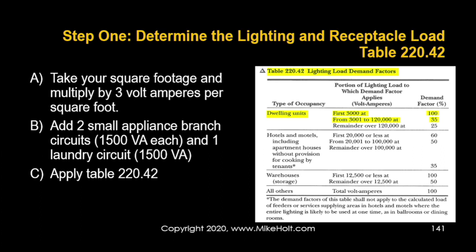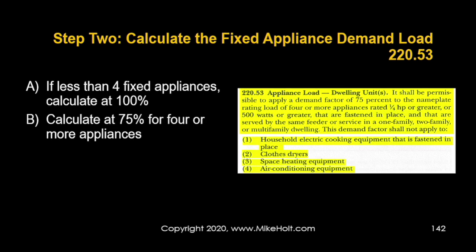Standard method steps: Step 1A — take square footage × 3 volt-amps per square foot. Step 1B — add two small appliance branch circuits at 1,500 VA each and one laundry branch circuit at 1,500 VA. Step 1C — apply Table 220.42 demand factors. Step 2 — calculate fixed appliance demand load: fewer than four appliances at 100%; four or more appliances at 75%, per 220.53.